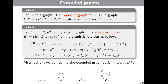Here is an easy example of a graph E and its extended graph Ē. The graph Ē is a graph of Laurent polynomials, and after completion with respect to the norm of Laurent polynomials, we get the C*-algebra of continuous functions over the circle.